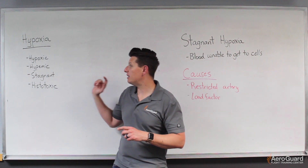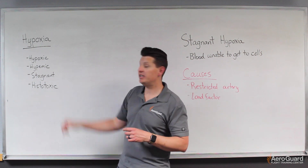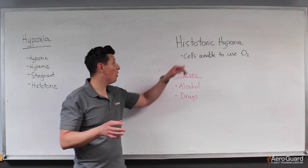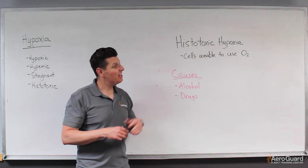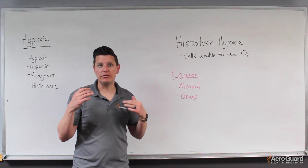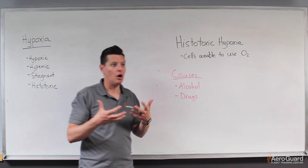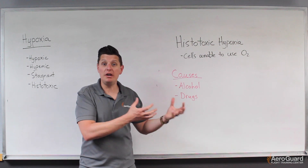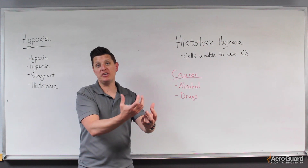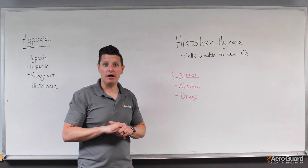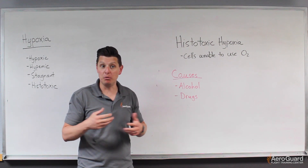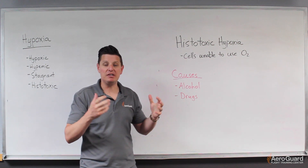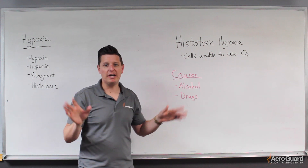Now we'll talk about the last type: histotoxic hypoxia. As you might guess from the word toxic — meaning poisonous — histotoxic hypoxia is a scenario where your cells are poisoned. Oxygen-rich blood makes it to the cell and offers oxygen, but the cell can't accept it. The cells are unable to collect the oxygen from the blood, usually due to issues with cellular transference.